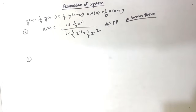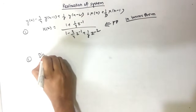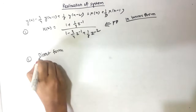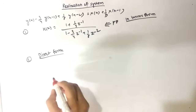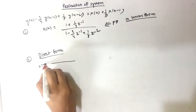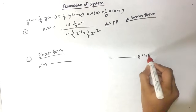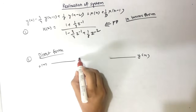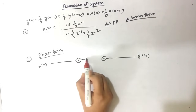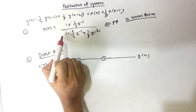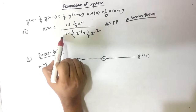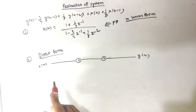Now we draw Direct Form 1. The first step is to place x(n) on the left-hand side and y(n) on the right-hand side, with two adder (plus) nodes. The numerator part always represents zeros and the denominator part always represents poles. In the left (forward) direction we write zeros, and in the right (feedback) direction we write poles.